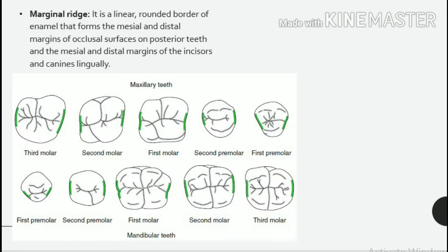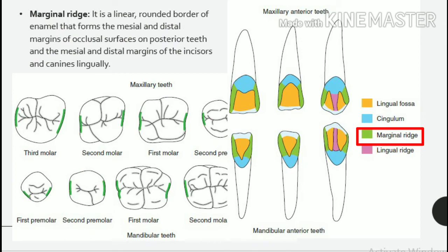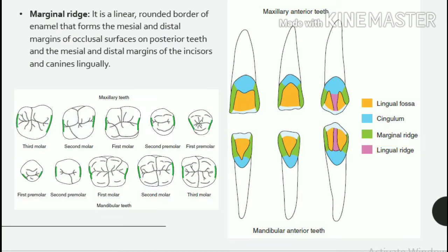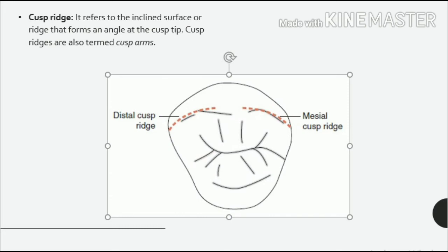Marginal ridge: it is a linear, rounded border of enamel that forms the mesial and distal margins of occlusal surfaces on posterior teeth, and the mesial and distal margins of the incisors and canines lingually. In anterior teeth, the marginal ridges run vertically in the cervicoincisal direction, and in posterior teeth they run horizontally in the buccolingual direction. Cusp ridge: it refers to the inclined surface or ridge that forms an angle at the cusp tip. Cusp ridges are also termed cusp arms.